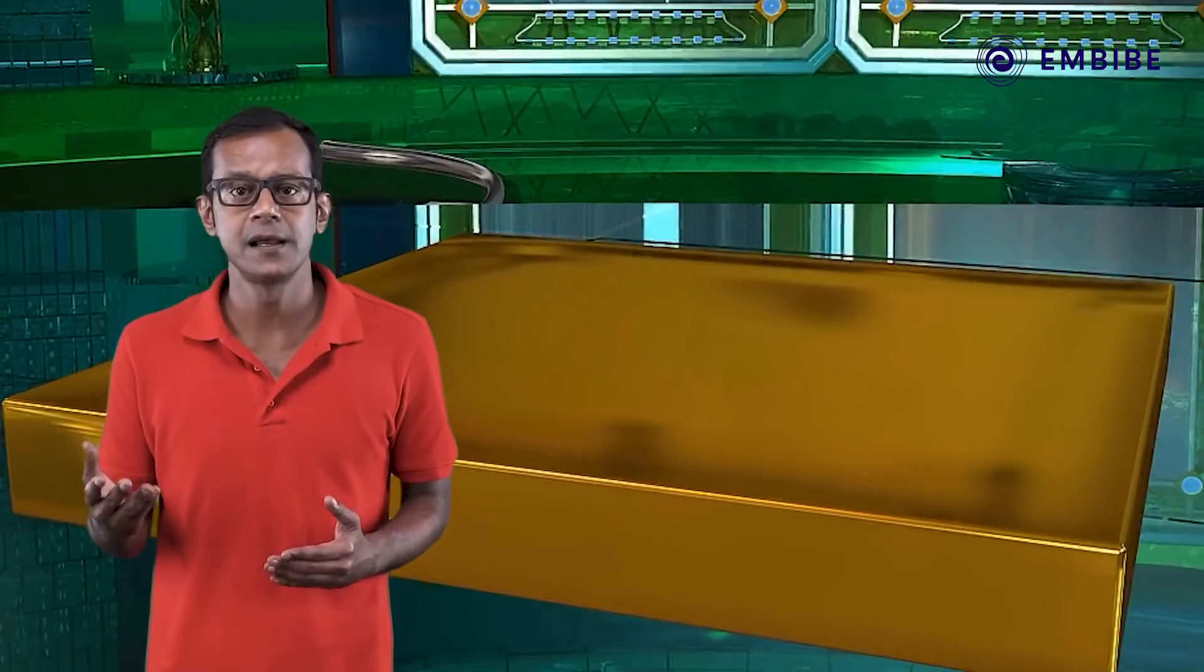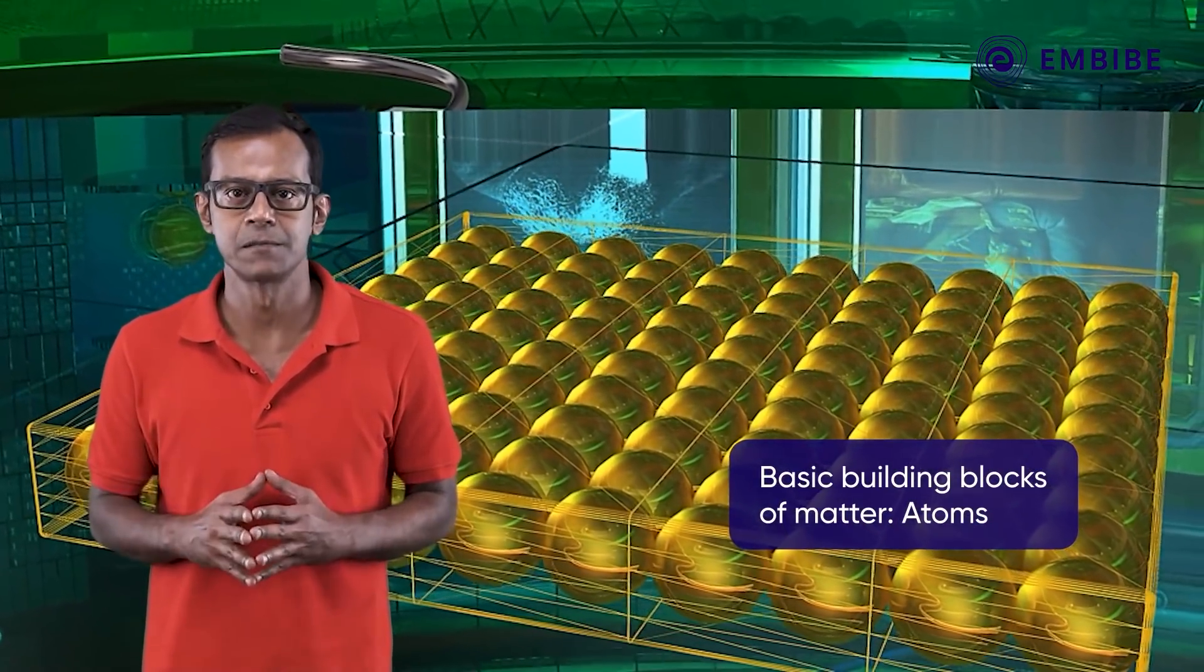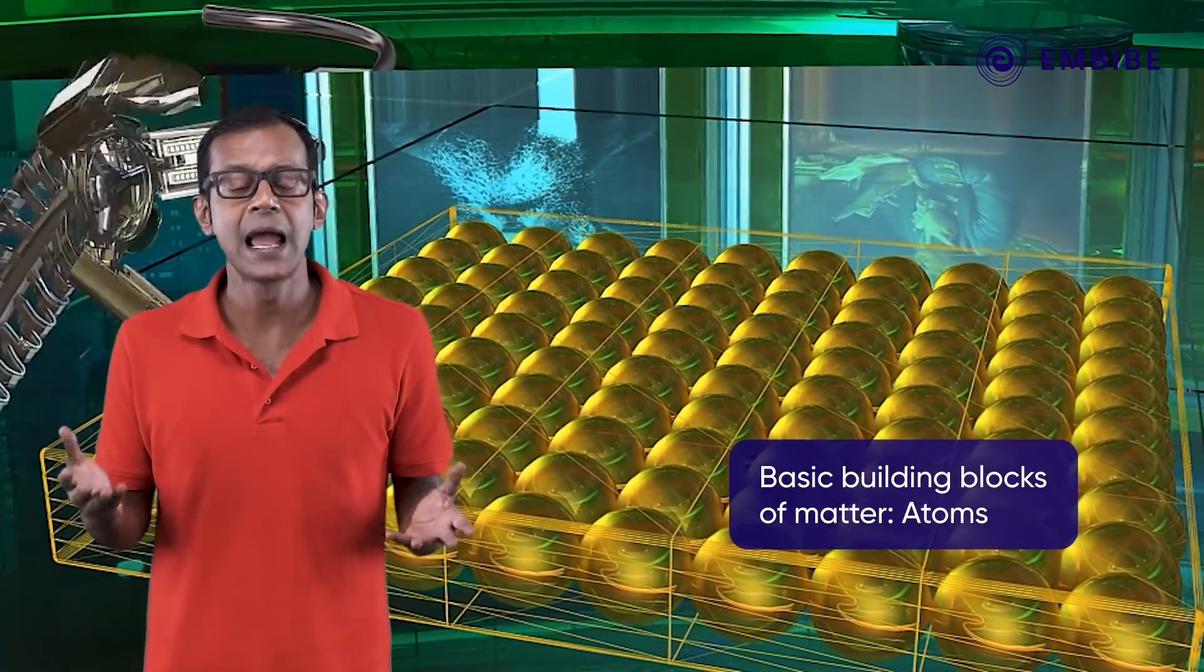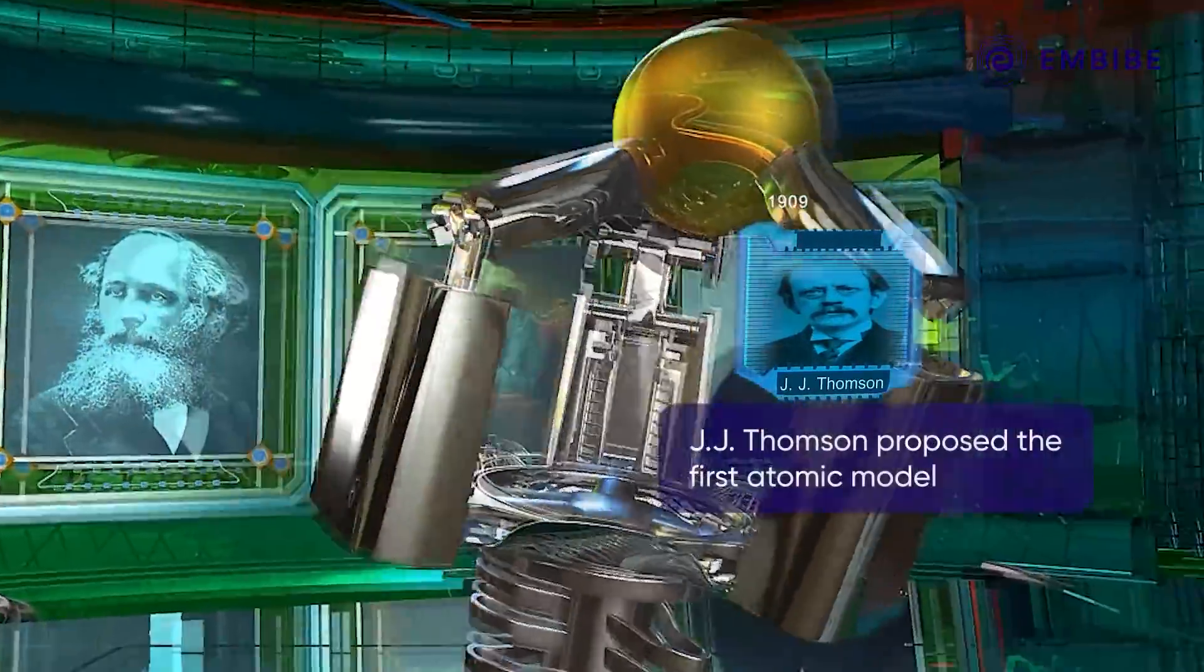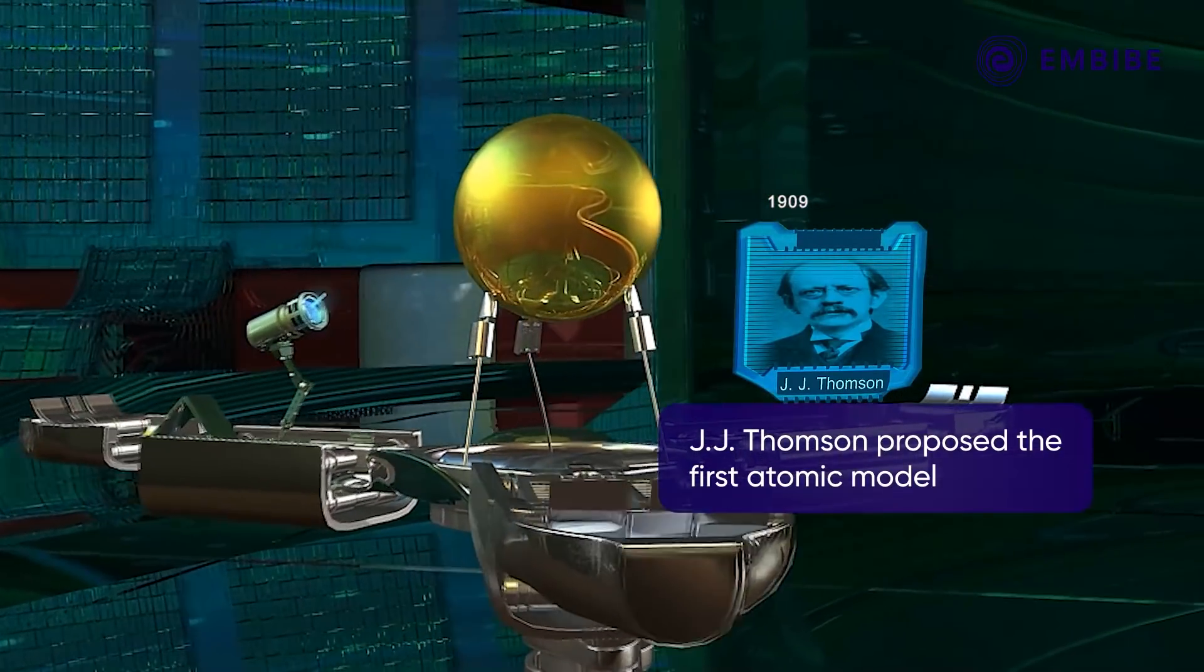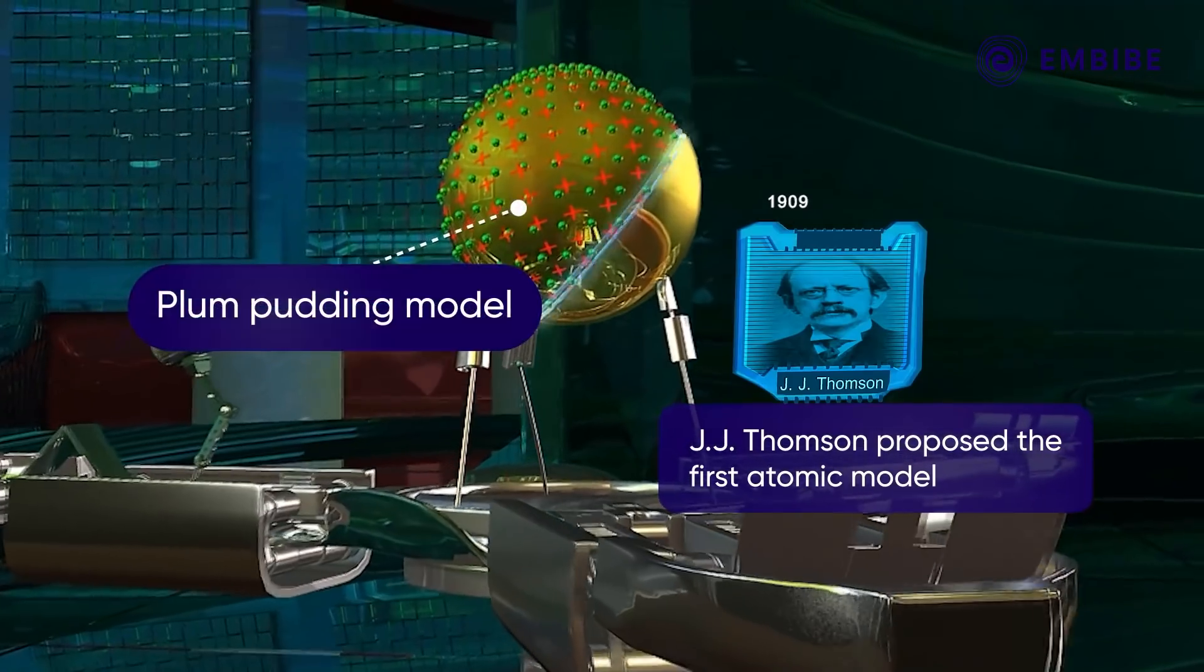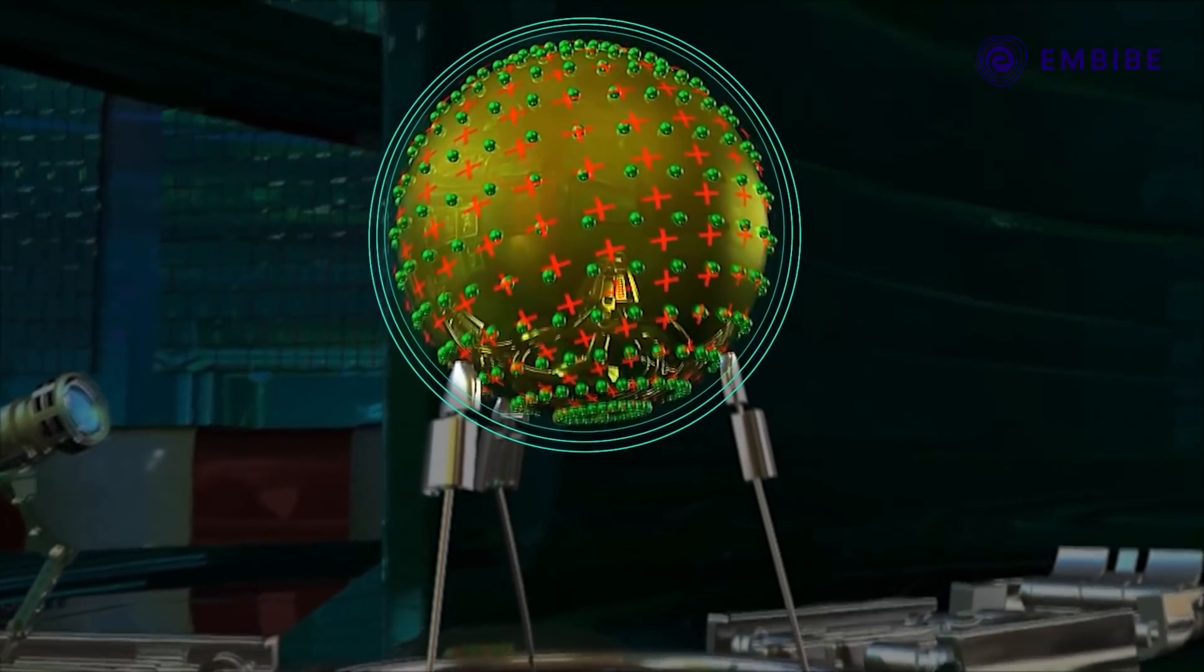For centuries, scientists and philosophers were trying to understand and probe the basic building blocks of matter. These were later to be known as atoms. Around 1909, J.J. Thompson proposed the first atomic model, popularly called the plum pudding model because it resembled a Christmas pudding.